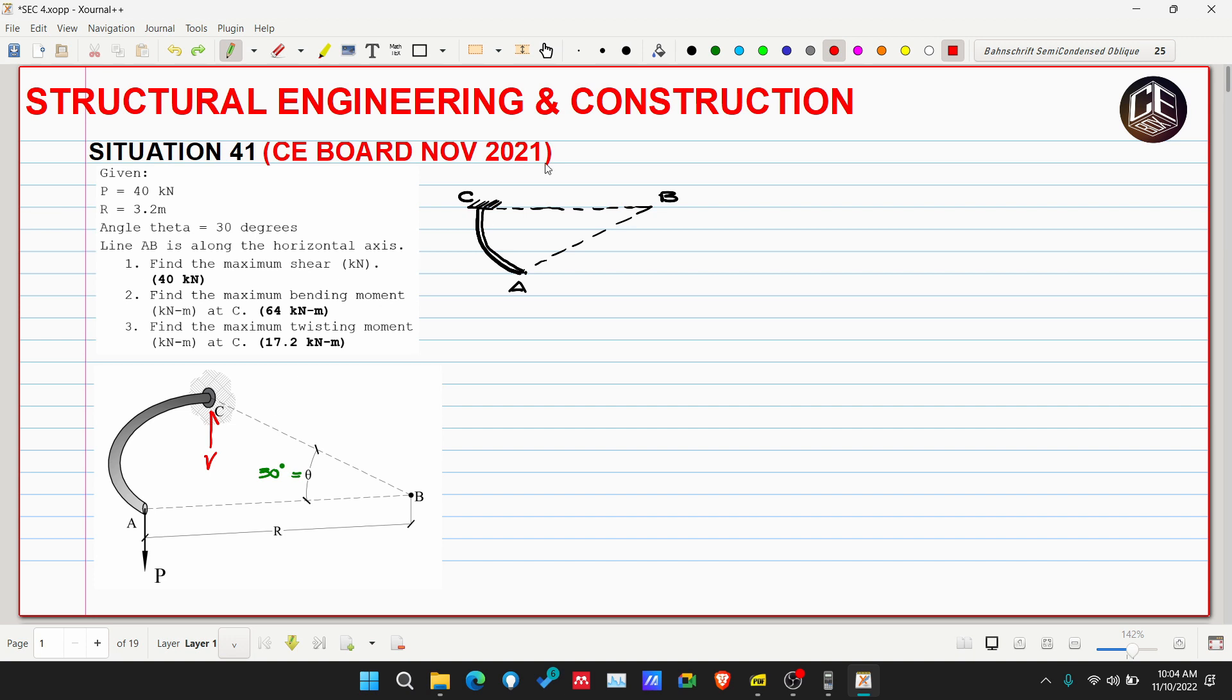So let's find the maximum shear, which is where we'll find the reaction at C. This is our shear B. Number one: the maximum shear is equivalent to, by summation of forces vertical, automatically our maximum shear is equivalent to 40 kilonewtons.